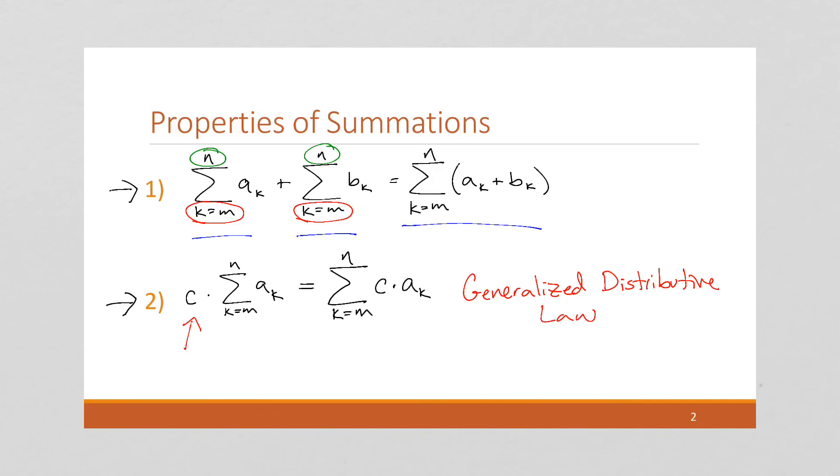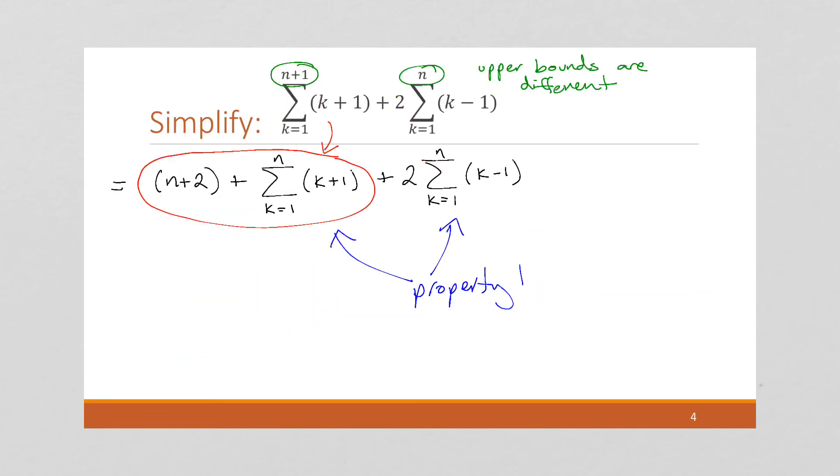So, we're going to first have to use the second property to suck that 2, that constant of 2 right here, into the sum.